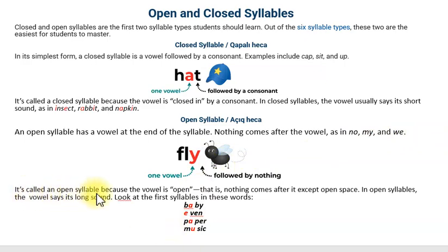It's called an open syllable because the vowel is open. Fly - one vowel followed by nothing. Yəni sait-dən sonra heç nə gəlməyib. That is, nothing comes after it except one open space. In open syllables the vowel says its long sound. Açıq hecalarda isə saitlər uzun tələffüz olunur, uzun səslənir.